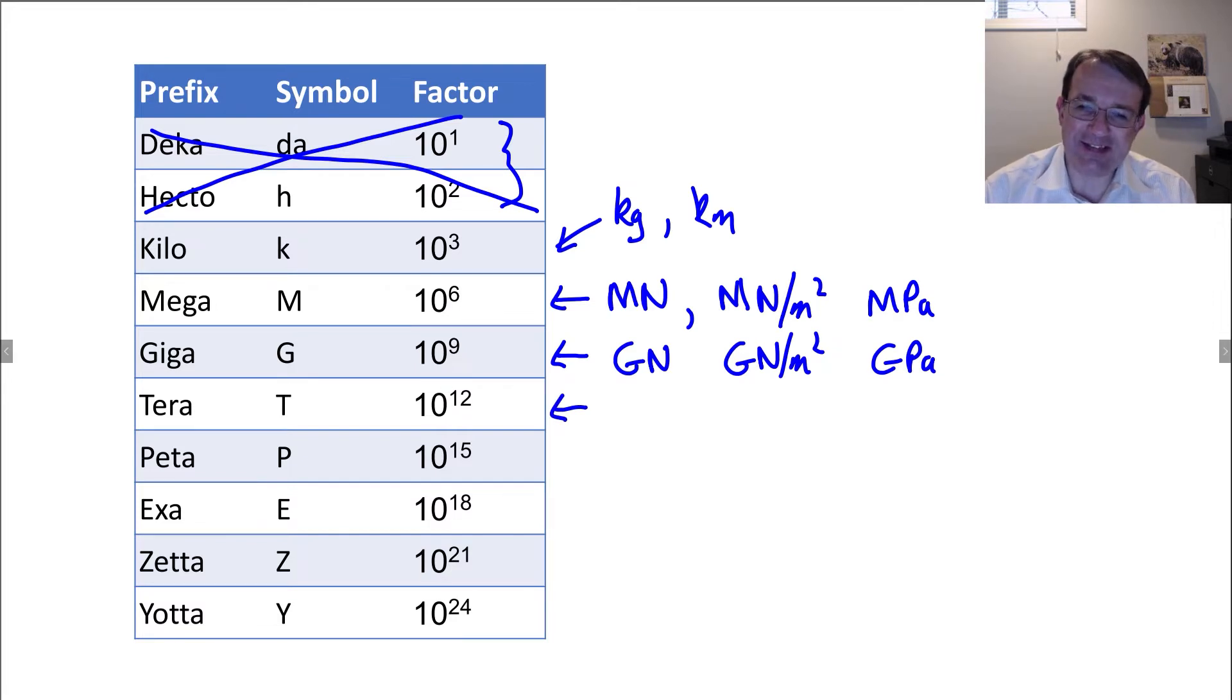An electron volt is a unit of energy - it's the energy that an electron gets when it moves through a potential difference of one volt. It's basically just the charge on the electron times one volt, so it's 1.6 times 10 to the minus 19 joules. This is the energy of one of the proton beams in the Large Hadron Collider.